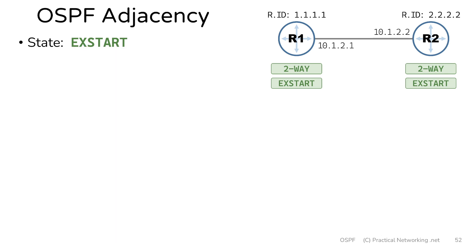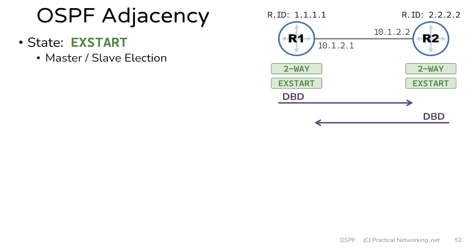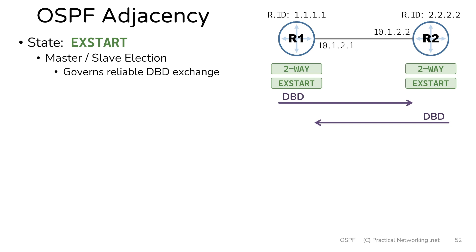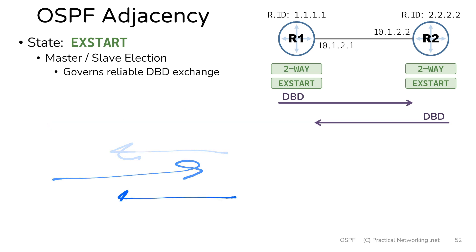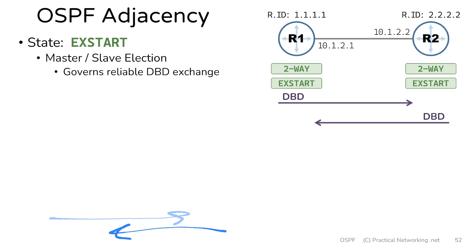Following the two-way state, both routers will go into the ExStart state, which stands for exchange start. In the ExStart state, the routers are going to exchange DBD packets, or database descriptors. The purpose of these DBD packets is to do the master and slave election. The purpose of the master-slave election is simply to govern the reliable exchange of further DBDs. The mechanism OSPF uses is that one router is elected as the master, and every DBD exchange conversation always goes: master says something, slave responds — a one-by-one send and receive process. The way the master-slave election works is initially both routers think they are the master, so they send DBDs indicating that. Then the router with the higher router ID is elected as the actual master. In our example, router2 has a higher numerical router ID, which means router1 is the slave and router2 is the master.